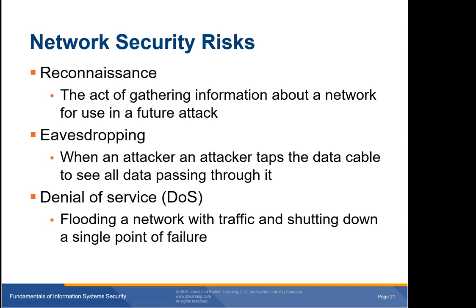Network reconnaissance is gathering information about a network for use in a future attack. Just as an attacking army needs advanced information about terrain, defenses, and weaknesses, a network attacker would want to know IP addresses, types of firewalls, remote access procedures, operating systems, and weaknesses in your network systems. You should block ICMP echo requests from outside your network to stop attackers from using ping and traceroute to gather information, and configure systems to provide as little information as possible to outsiders.